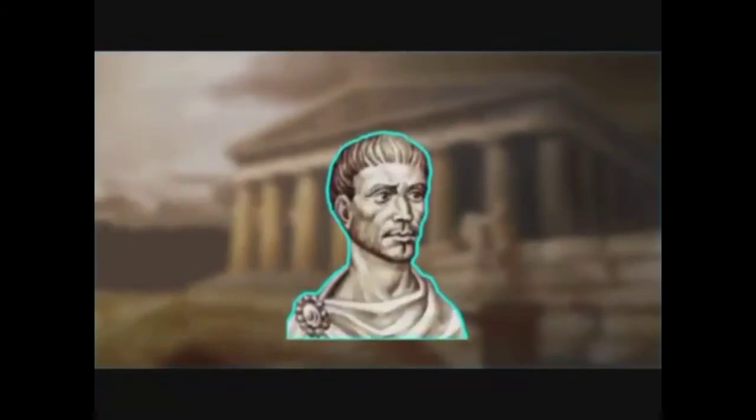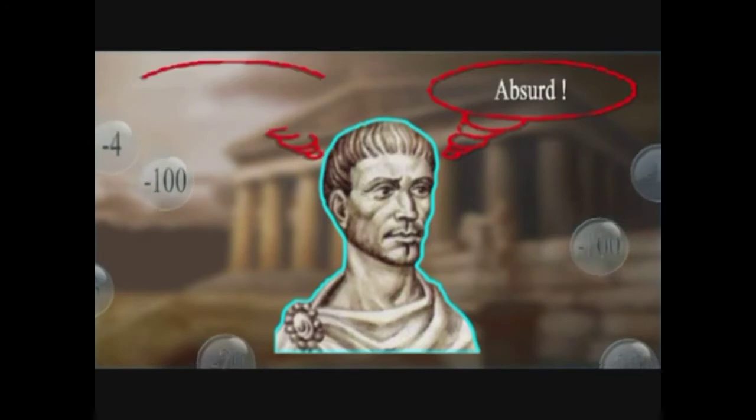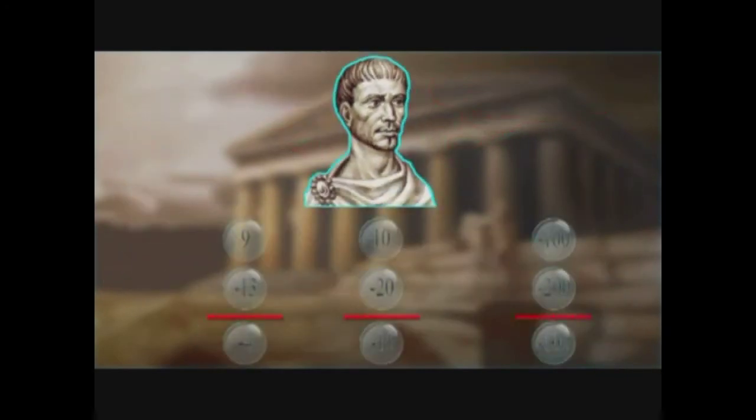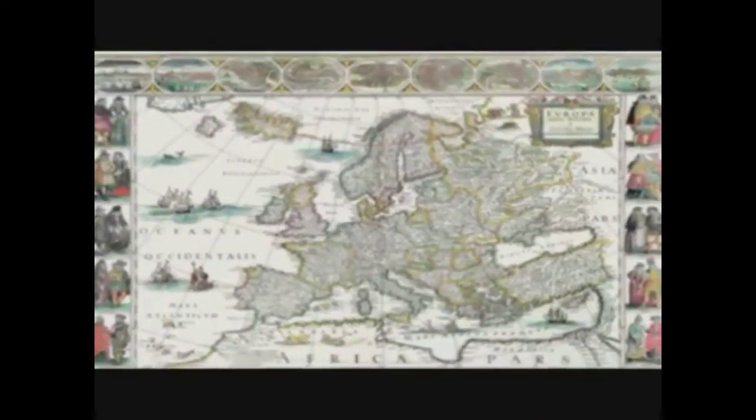Now the Greeks like Diophantus pooh-poohed these ideas and called negative numbers absurd and impossible, and completely ignored them. They couldn't see how a negative number could be meaningful because it was not possible to have a quantity that was less than nothing. This opinion was passed down to later mathematicians in Europe.